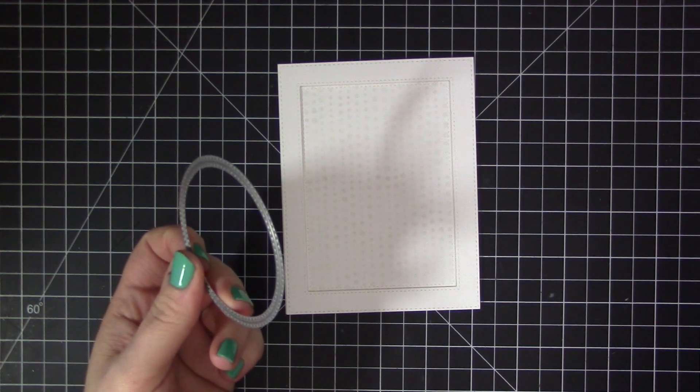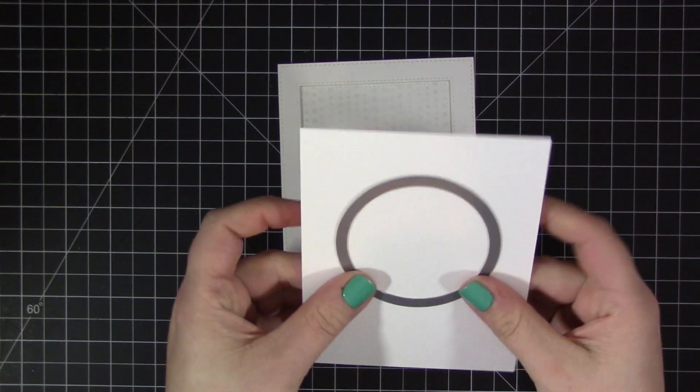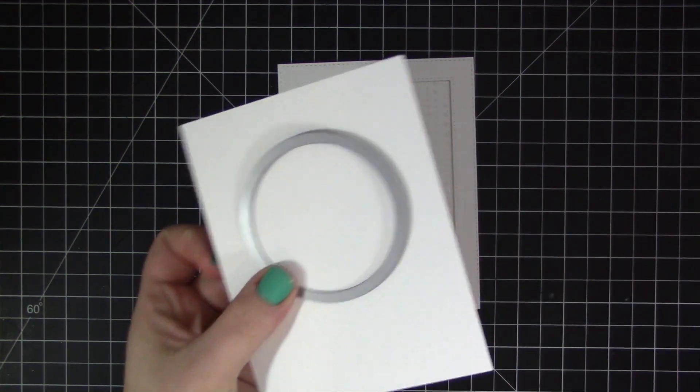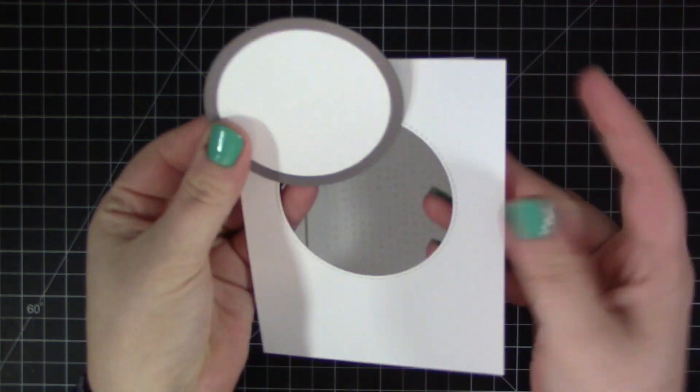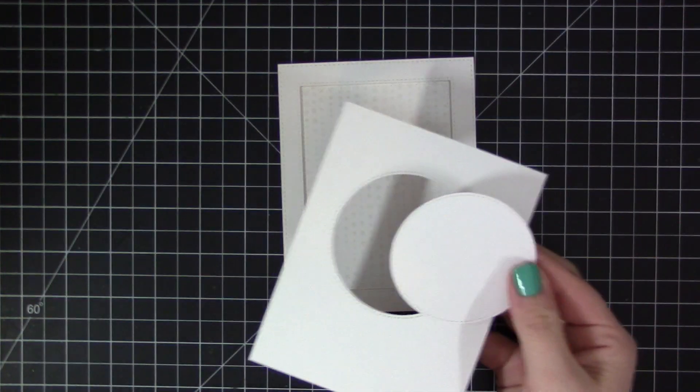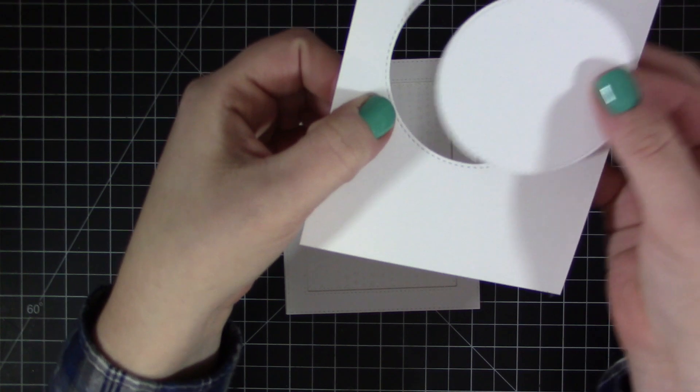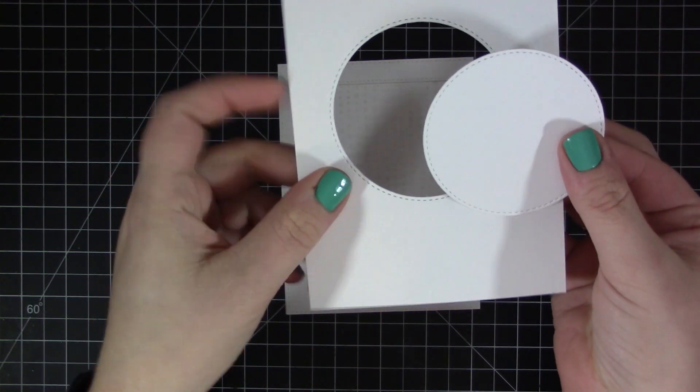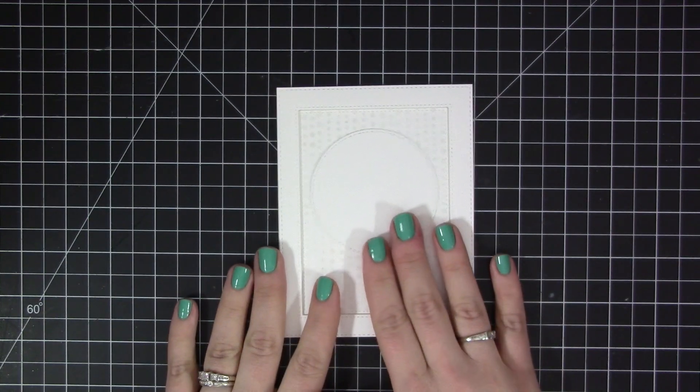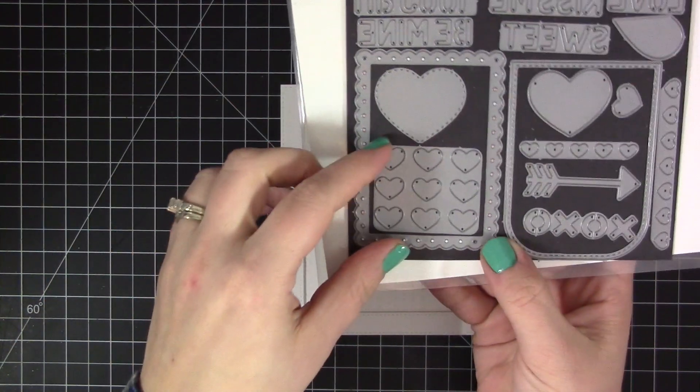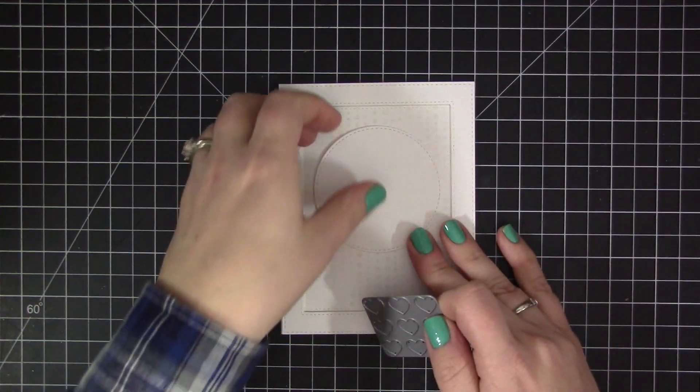Now I'm going to add some details to the middle area of the card. I'm using the third largest stitched circle Inside and Out Stacks dies. I cut this out of a white cardstock panel and we're going to use that negative panel for the second card, so I'm setting that aside. I'm just going to use the positive piece here, which is the stitched circle.